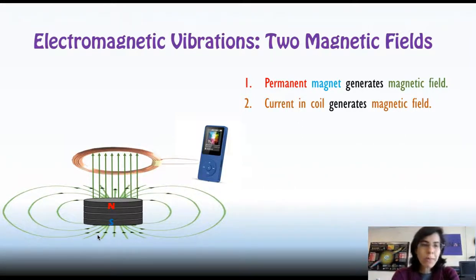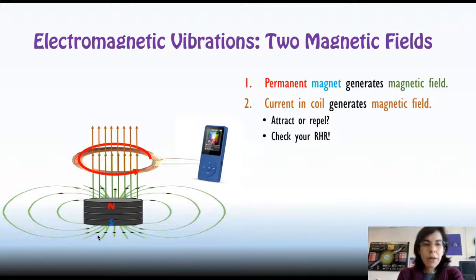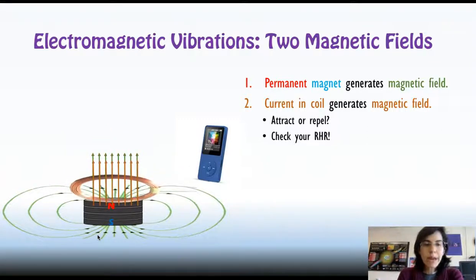Now, we want to make this coil vibrate up and down. Attract, repel. Attract, repel. How do we decide which one is which? Check your right-hand rule. If the current is going counterclockwise through the coil, which way will the magnetic field be going? That's right. It will be going up. Magnetic fields aligned. That is attract. The coil will move down.